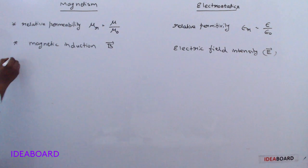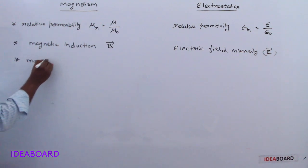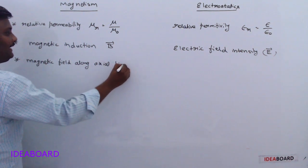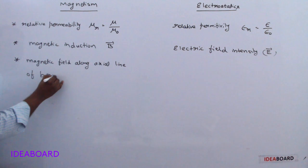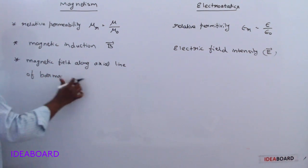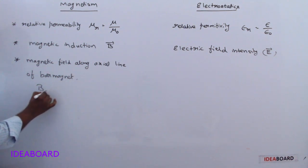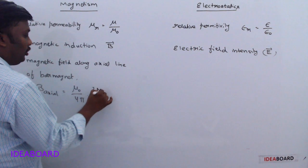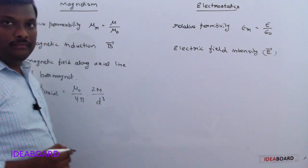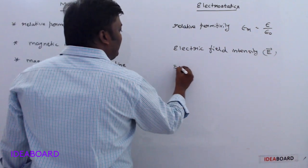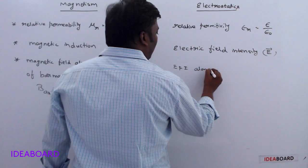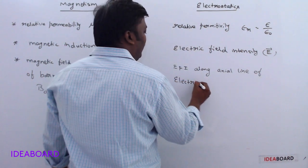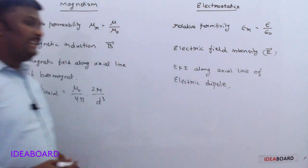The magnetic field along the axial line of a bar magnet — for a shorter dipole — is given by: B_axial = (μ₀/4π) × (2M/d³). Similarly, the electric field intensity along the axial line of an electric dipole follows the same structure.